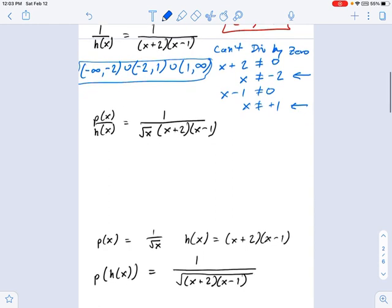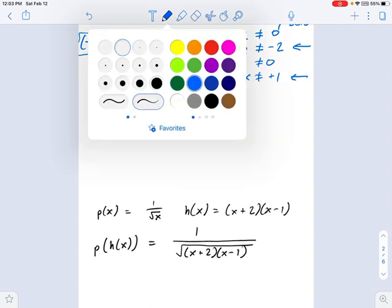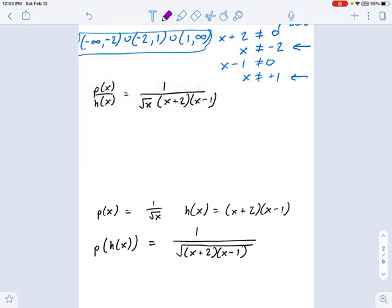All right, now things are getting a little more complicated. P over h is just equal to what I've written here. If you're not seeing that, I want you to take a little pause on the video and prove that to yourself. And now think about the things, the domain restrictions here.